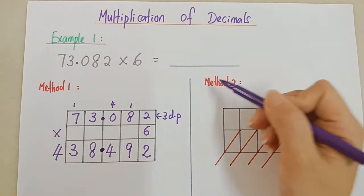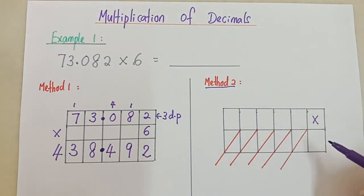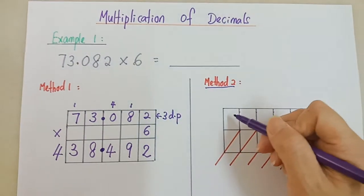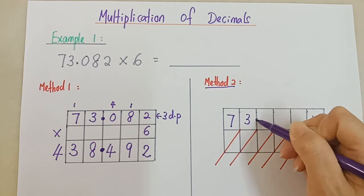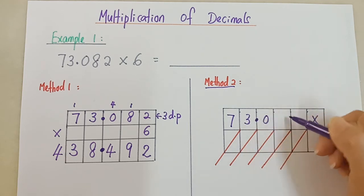Look at method 2. Method 2, I use lattice. Remember or not, when you times whole number in your last topic, we can use lattice method. Now I fill in the number first, the decimal: 73.082 times 6.